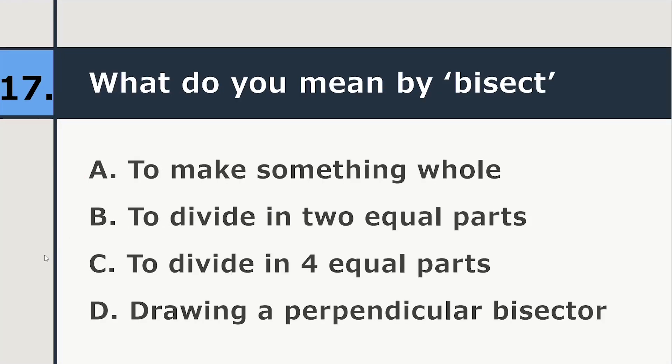What do you mean by bisect? To make something whole, to divide in two equal parts, to divide in four equal parts, or drawing a perpendicular bisector. So correct answer is to divide in two equal parts.